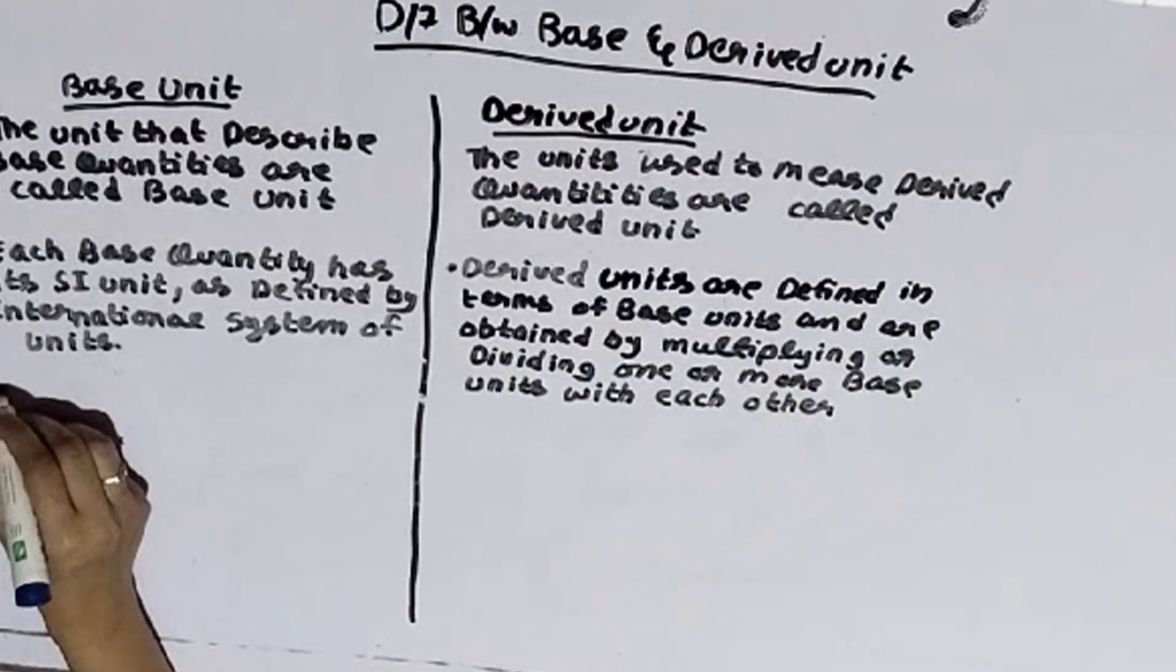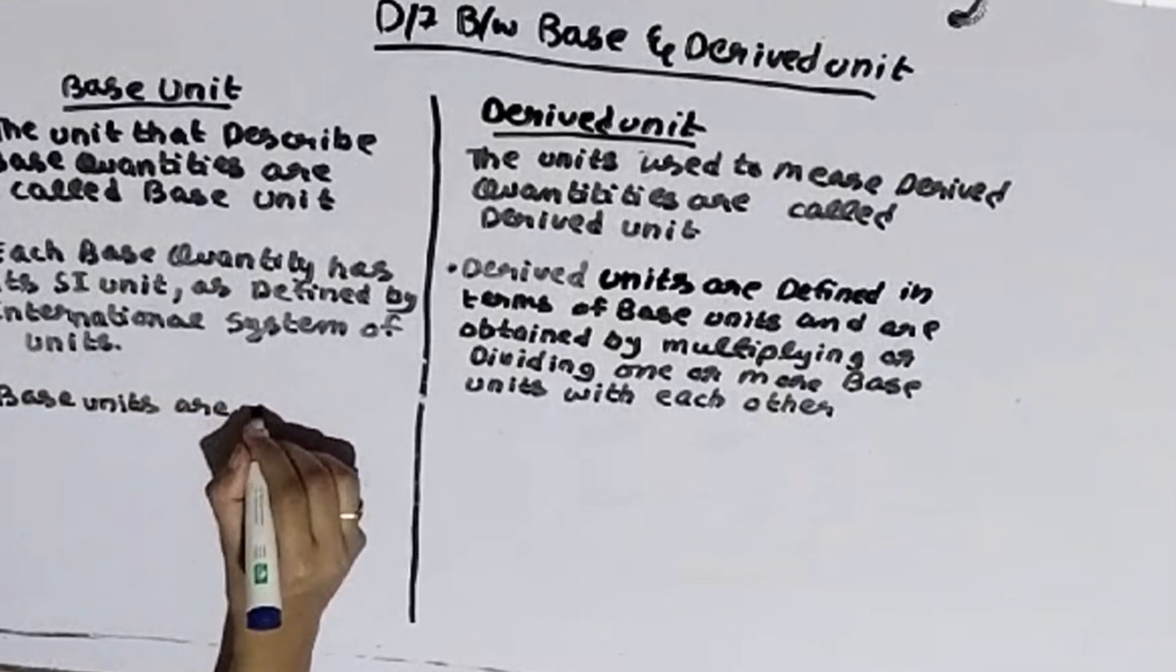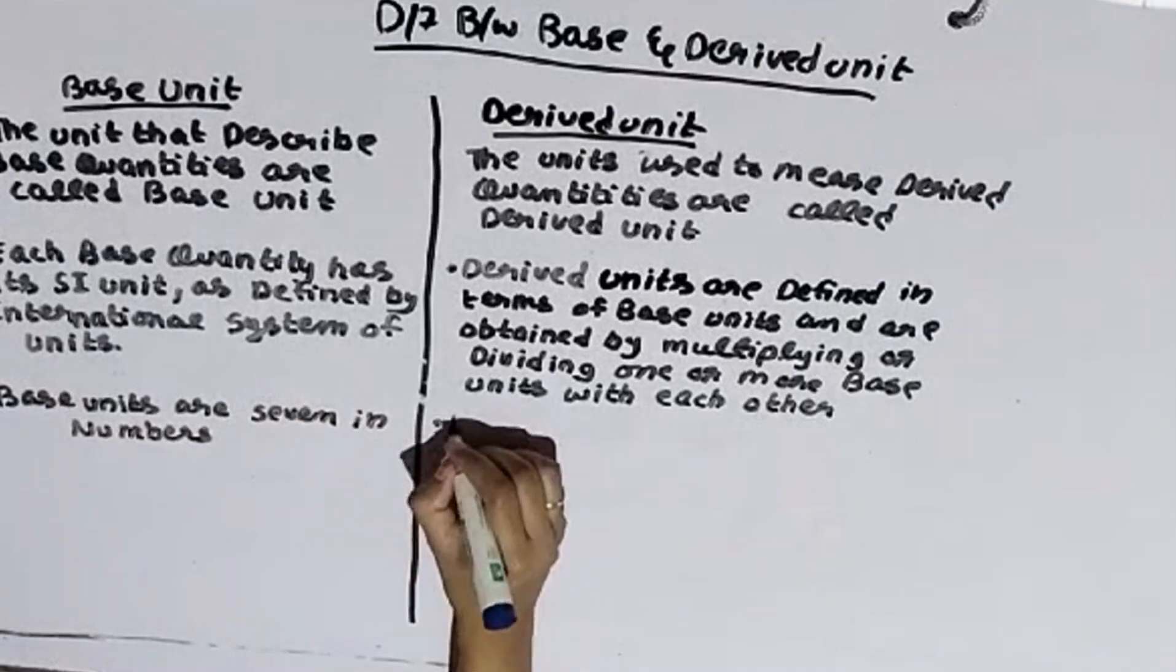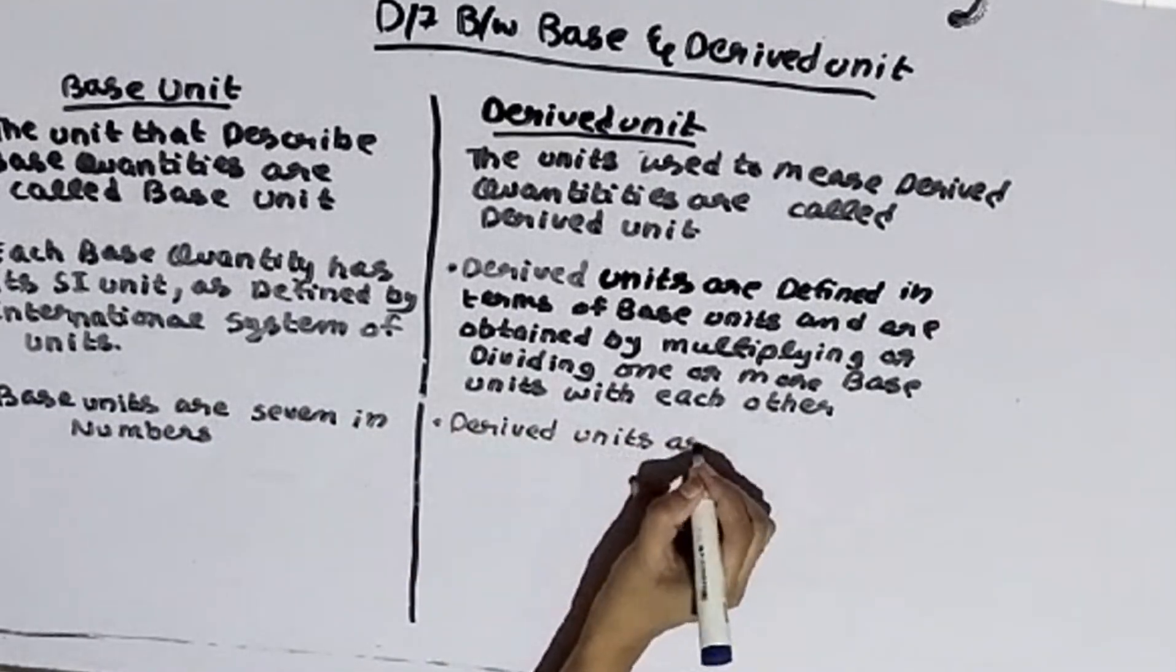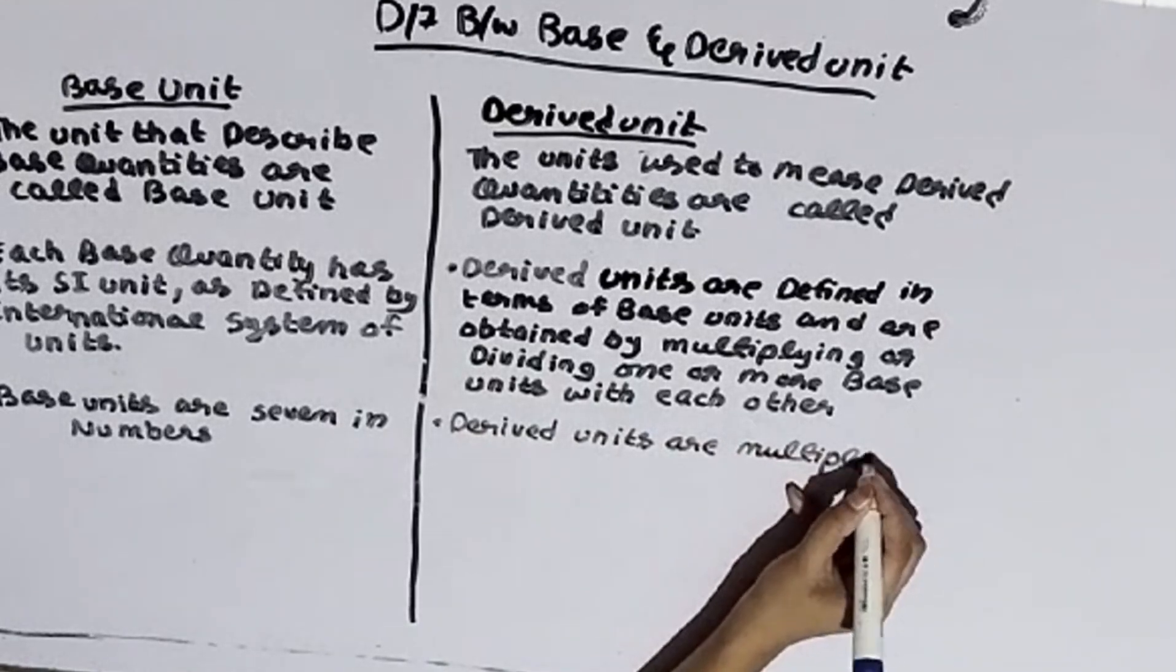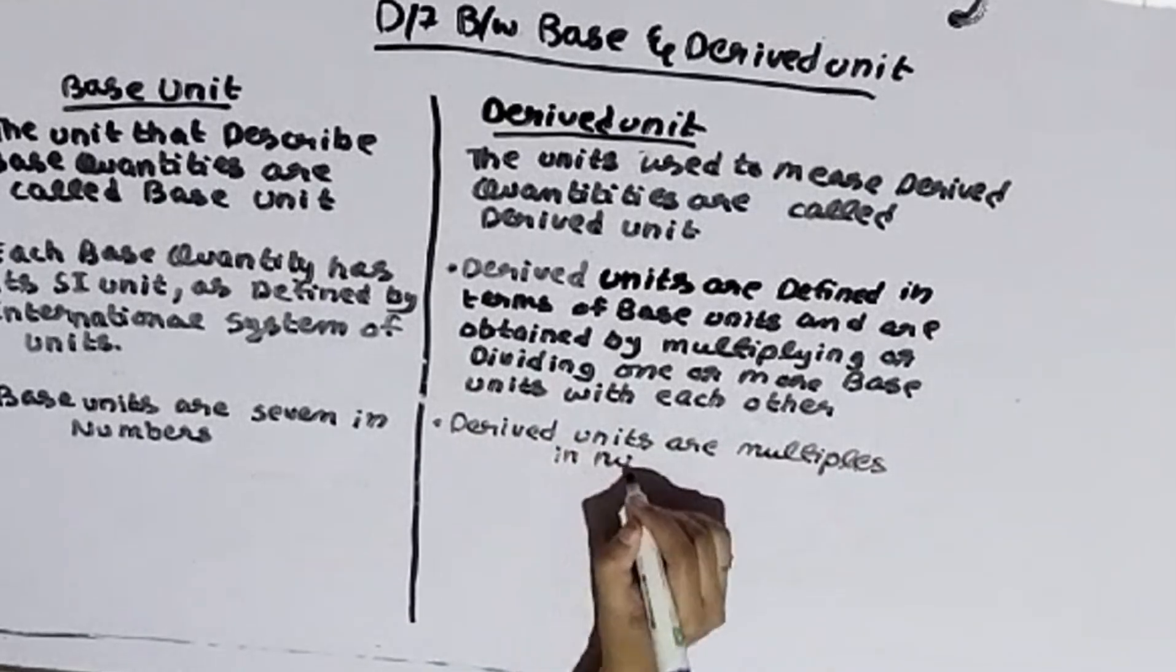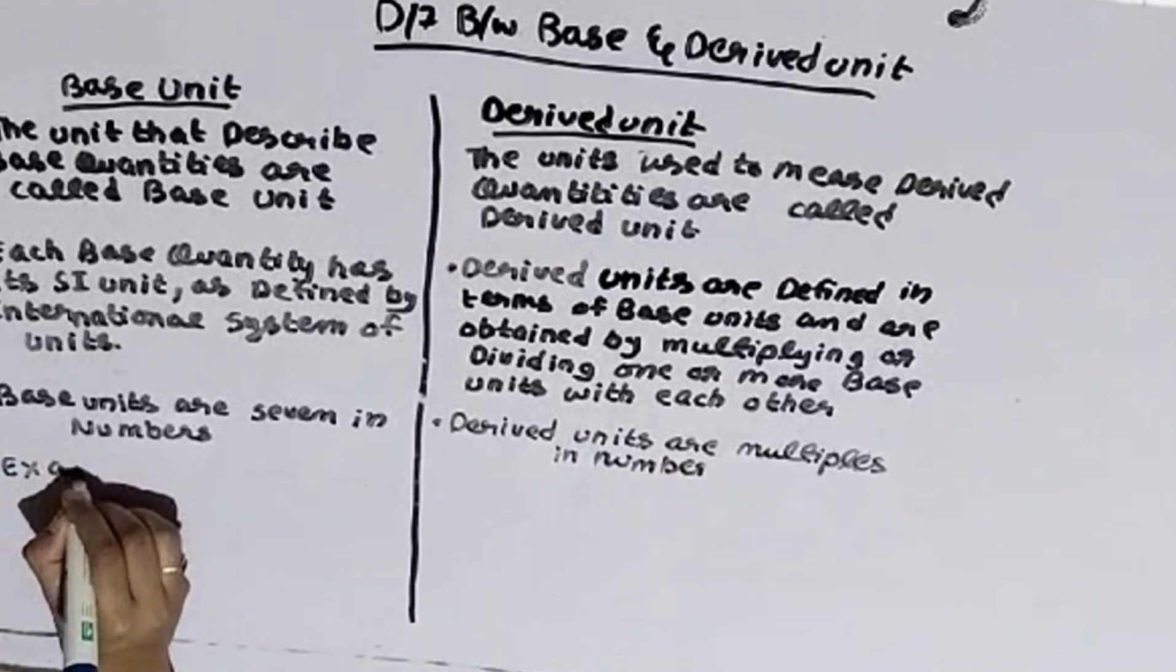Point 3: Base units are 7 in number. Derived units are multiples in number.